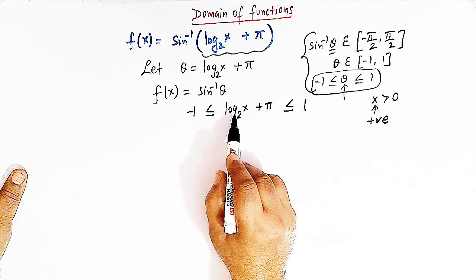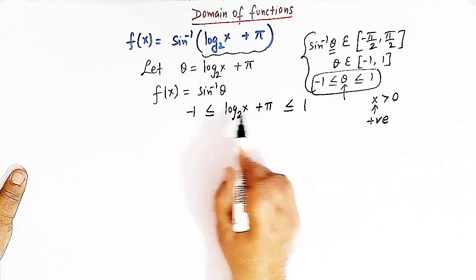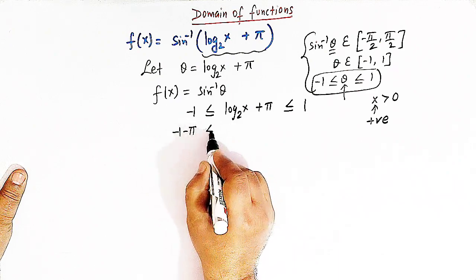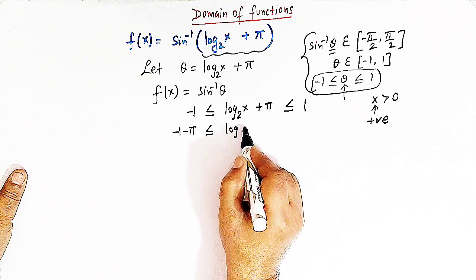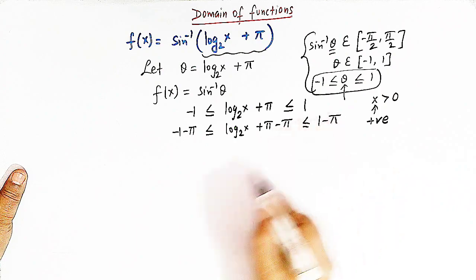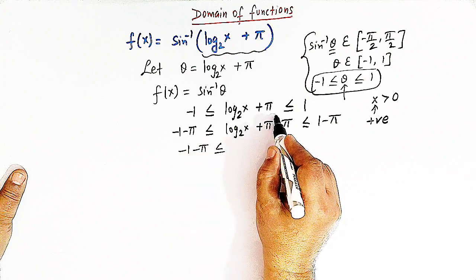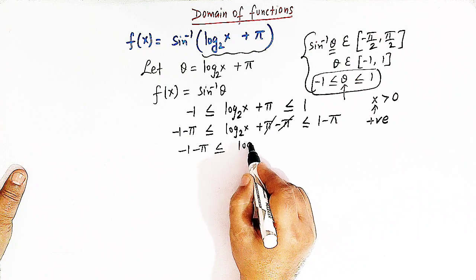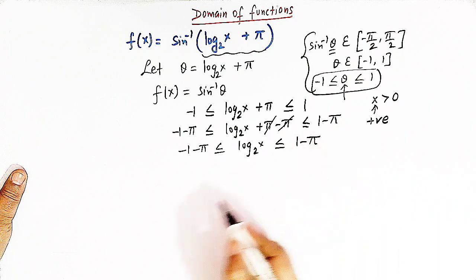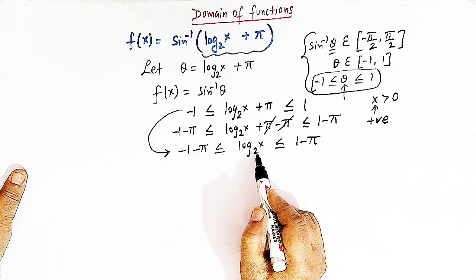Let us solve this inequality. What we will do here is subtract pi throughout the inequality. So we have minus 1 minus pi, then we have log of x to the base 2 plus pi minus pi, and here we have 1 minus pi. The pi terms cancel, so we have: minus 1 minus pi is less than or equal to log of x to the base 2, which is less than or equal to 1 minus pi.